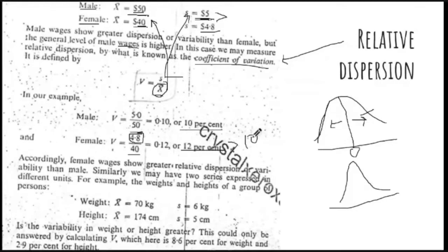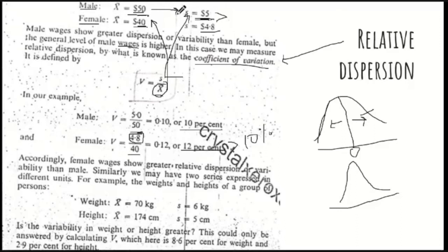When we correct this, we are dividing the standard deviation by the average. Because males' average is more than females', the standard deviation relative to the average is larger. In the coefficient of variation, this problem is eliminated. So when we compare two distributions, we should not compare them using the absolute standard deviation — that would be wrong.